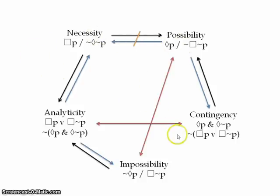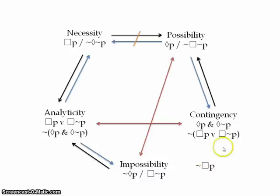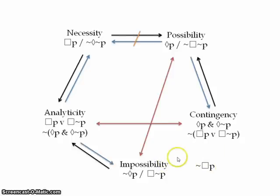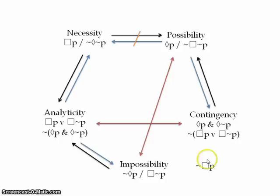We can add other things to this. We can take not necessarily, for example. And there's one for you to think about: what would it imply and what would it rule out? Which of the relations are true intuitively and which are true purely in virtue of the logical form? So that's one for you to think about there.